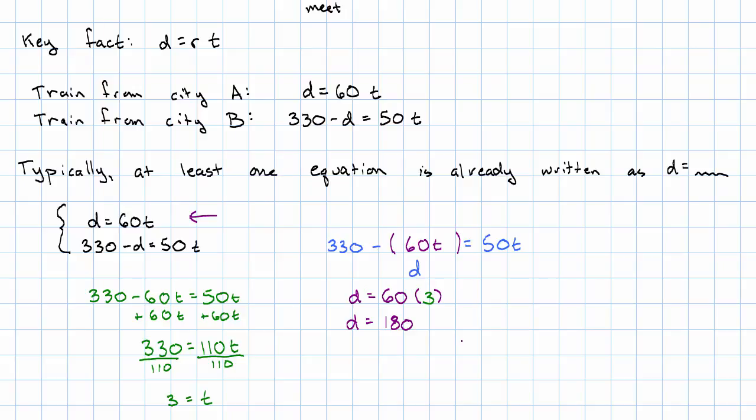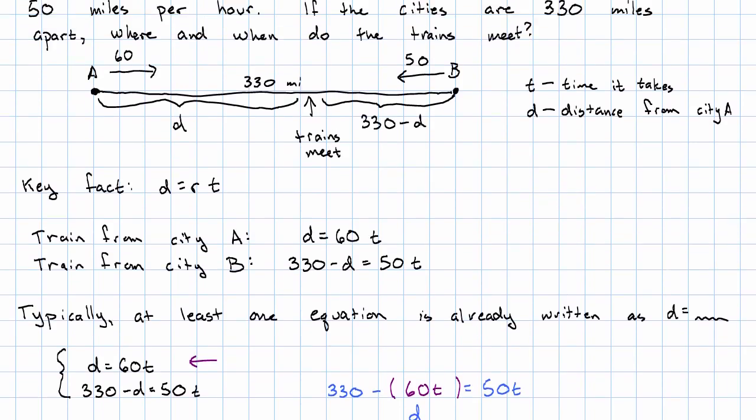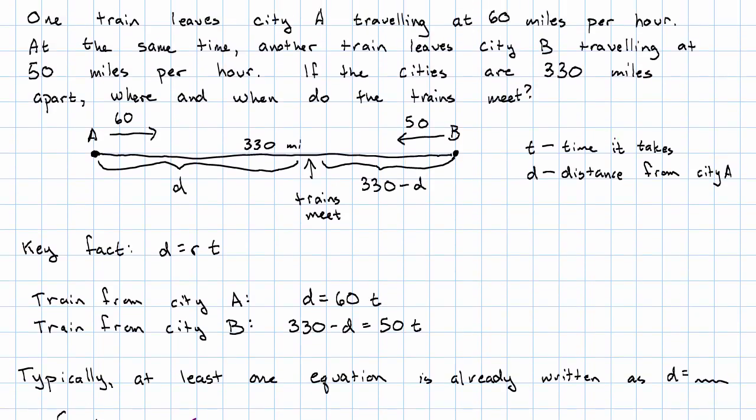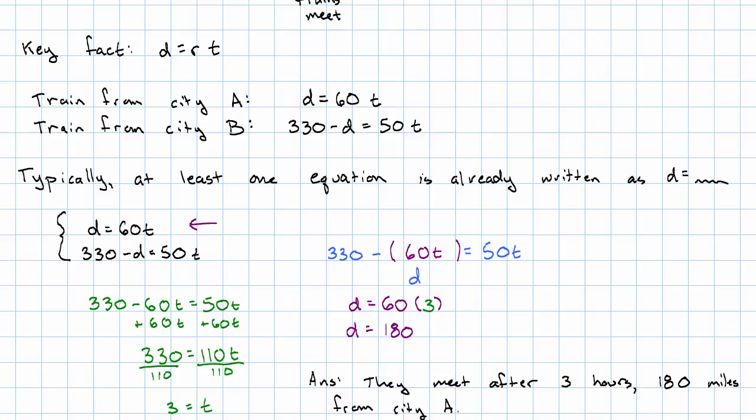Let's go back to what we've said about the variables in order to answer our question. T is the time that it takes and D is the distance from City A that they meet. Our answer, then, is that they meet after 3 hours, 180 miles from City A.